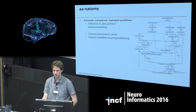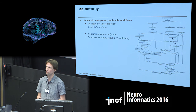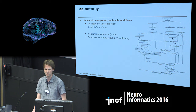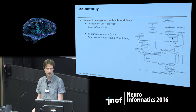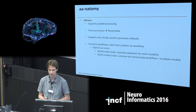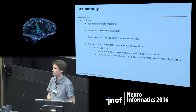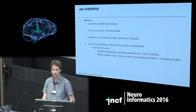AA provides automatic, transparent, and replicable workflows because it's a collection of best practices. These recipes, task lists, or workflows as we call them can grow continuously. It also captures provenance, and these provenance records as well as task lists can be recycled and published. It's very efficient and supports parallel processing — all modules which are independent, for example across subjects or sessions, can run in parallel if you have a cluster configured.